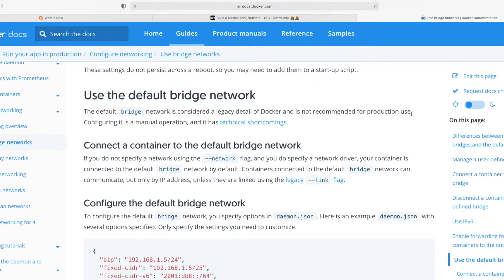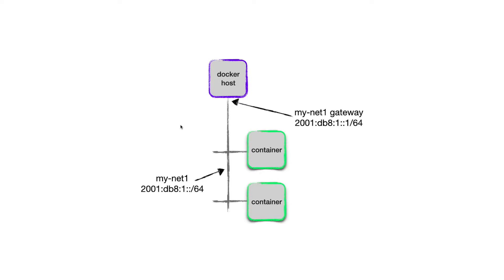User-defined bridge networks look quite similar at a high level to the Docker0 bridge: the Docker host acts as the gateway, containers are assigned to the network and can speak to each other, the host, and external networks if routing is set up. But to create them you run a 'docker network create' command and define both the prefix and the name. There are obviously differences versus Docker0 — that's why Docker issued that warning — but I won't go further into that here.